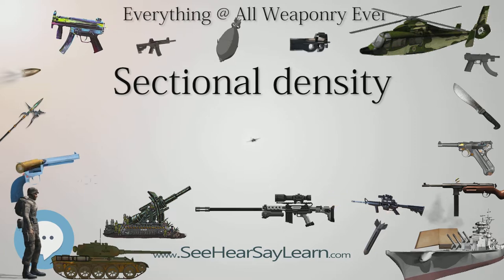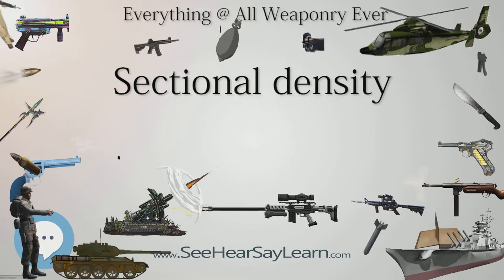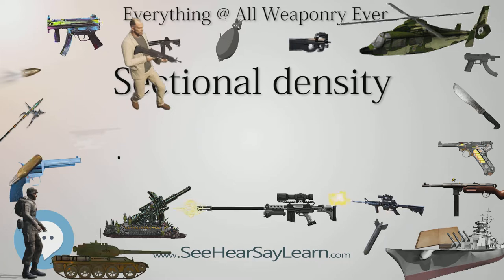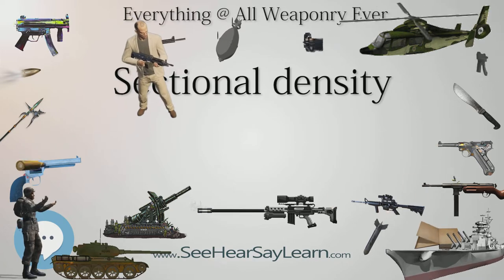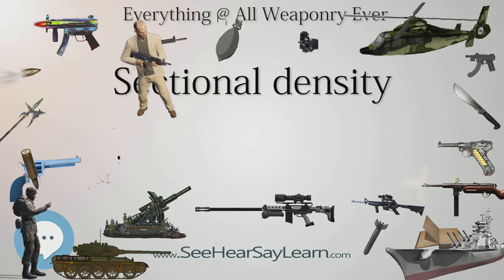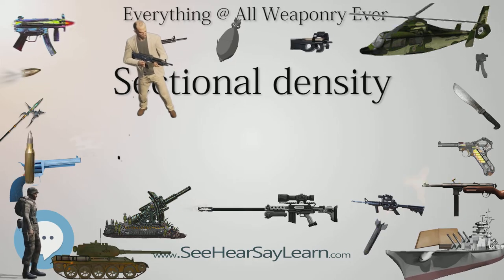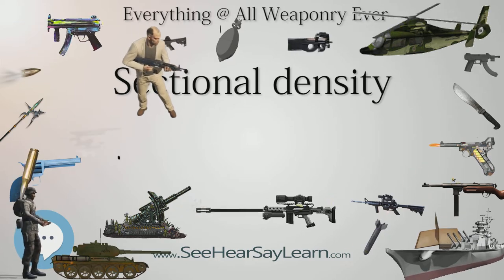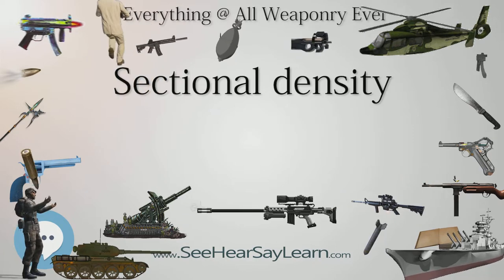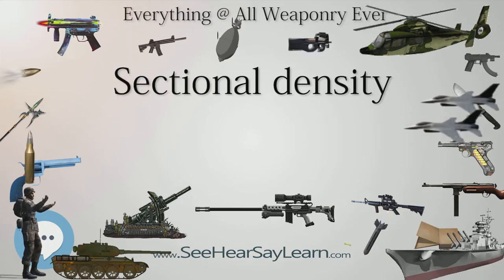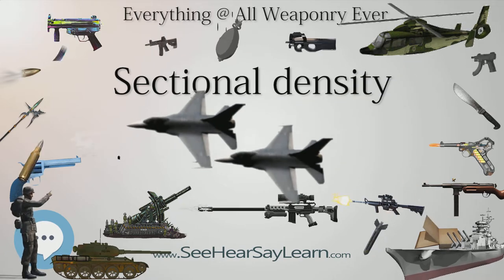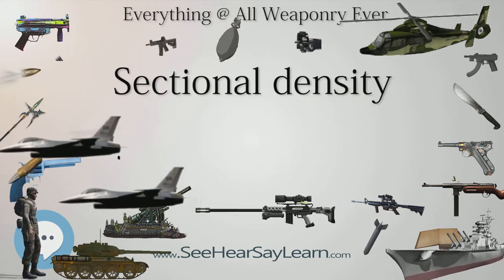Bashforth's proposed standard projectiles all have a weight of one pound and a diameter — though some authors note this should perhaps be radius, given issues with the algebra on surface area, and question whether the reference is to the cross-section of a circle or a disk — of one inch, which gives them a sectional density of 1 lb/in².